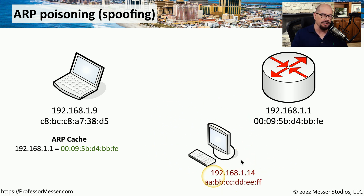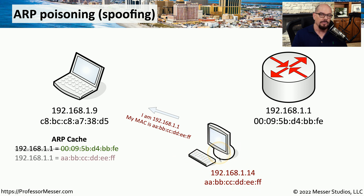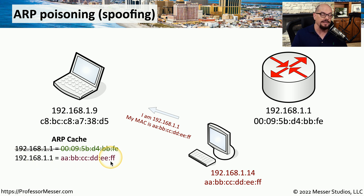Let's say that we have an attacker on this local network. This attacker has an IP address of 192.168.1.14, and the MAC address ends with EEFF. To begin the attack, the attacker sends a spoofed ARP response saying that the attacker is 192.168.1.1, and the MAC address of this IP address ends in EEFF — which is the MAC address of the attacker's computer. When this is received by the laptop, it realizes the MAC address must have changed, so it modifies the ARP cache to have the same IP address, but now the MAC address has been set to the MAC address of the attacker. This means that anything sent to 192.168.1.1 would not go to the router, but instead be sent to the attacker.